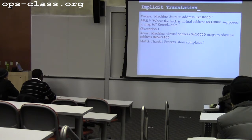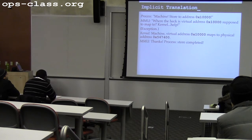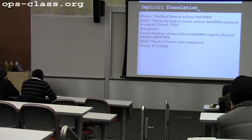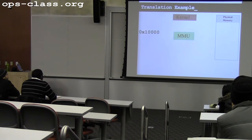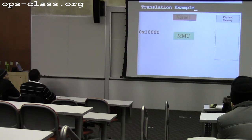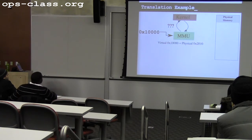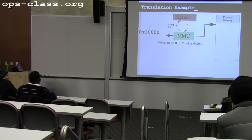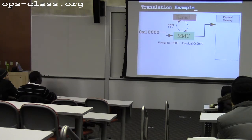In this case, we're assuming we could find a valid translation for the address. The kernel is going to tell the MMU: this address maps to this physical address. The MMU will say OK, and then allow the store to complete. Importantly, the process has no idea what physical address is being used — this is never communicated to the process. The process thinks it just did a store to 0x10000. That's all it knows.